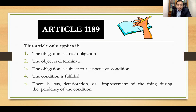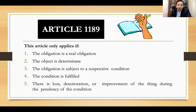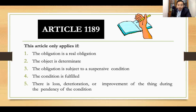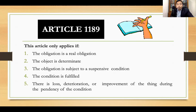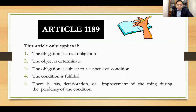Let us break down Article 1189. Article 1189 applies only if the obligation is a real obligation. When you say real obligation, the obligation or prestation involved is delivery or payment. Second, the object must be determinate. You remember the rule that the loss of the thing without the fault of the creditor due to a fortuitous event will extinguish the obligation only if the object is determinate. So, Article 1189 will apply only if the obligation is real and the object is determinate.